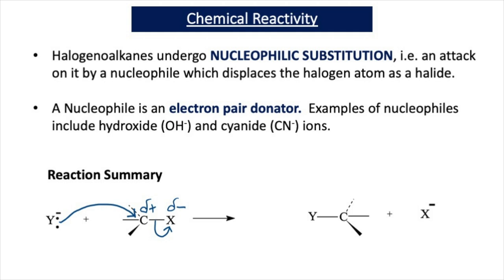The carbon is delta-plus because in a halogeanoalkane, the carbon is next to a halogen which is more electronegative than carbon, and that's why a dipole exists — delta-plus on the carbon and delta-minus on the halogen. When a pair of electrons moves towards the delta-plus carbon, this causes the carbon-halogen bond to break. I represent the movement of electrons towards the delta-plus carbon with a double-headed arrow.